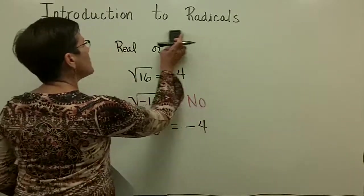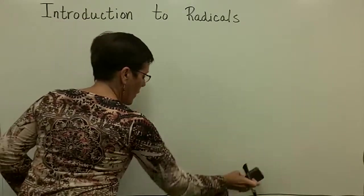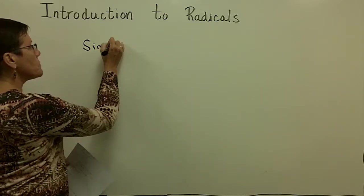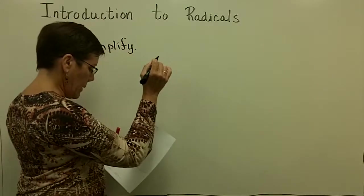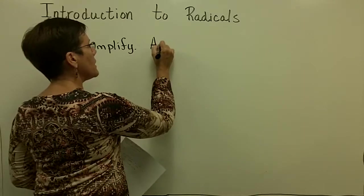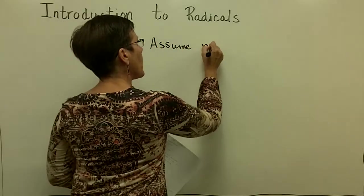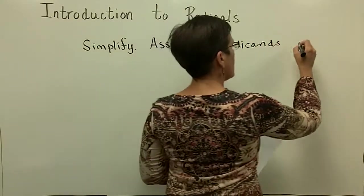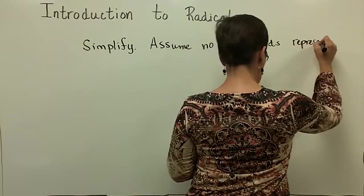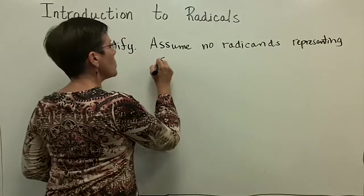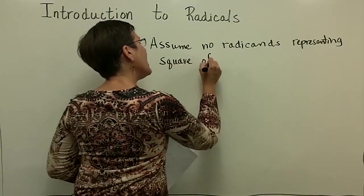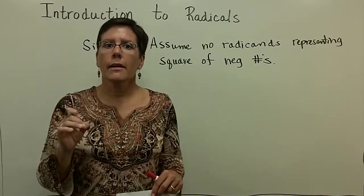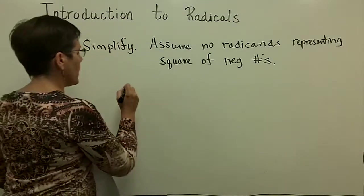Finally, let's simplify some algebraic expressions. The radicand under the radical. So I'm just going to put up here, in terms of directions, simplify. But I'm going to try to briefly write here, assume no radicands representing square of negative numbers. I don't think I'm going to get into that issue. But essentially, it gets at the fact that if you use negative numbers for the variable in the expression, for example, the square root of x squared.